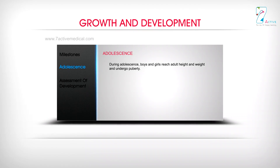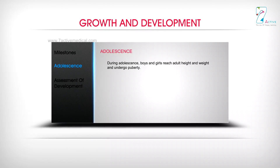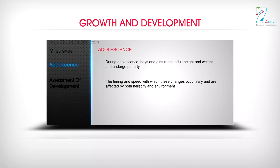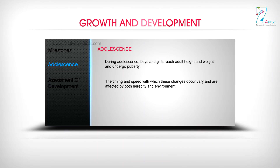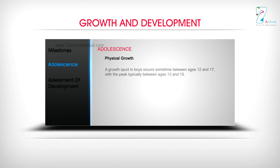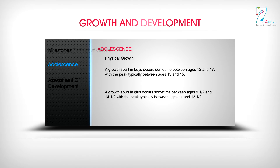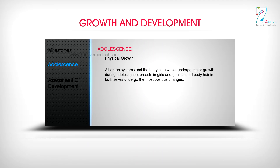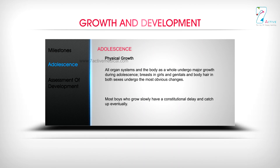Adolescence: During adolescence, boys and girls reach adult height and weight and undergo puberty. The timing and speed of these changes vary and are affected by both heredity and environment. A growth spurt in boys occurs between ages 12 and 17, with a peak typically between ages 13 and 15. A growth spurt in girls occurs between ages 9.5 and 14.5, with the peak typically between ages 11 and 13.5. All organ systems undergo major growth during adolescence. Breasts in girls and genitals and body hair in both sexes undergo the most obvious changes. Most boys who grow slowly have a constitutional delay and catch up eventually.